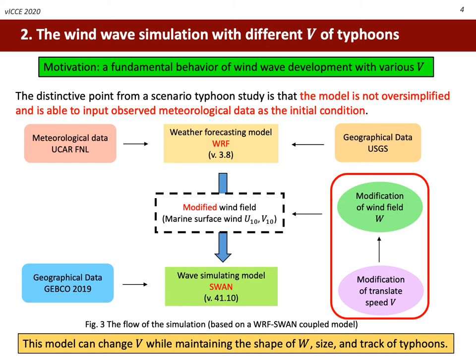This research was aimed at proposing a different method from a scenario typhoon study that could simulate slow-moving typhoons. Furthermore, a fundamental behavior of wave development with various translate speeds was investigated. This study utilized a WRF-SWAN coupled model. WRF is a weather forecasting model and SWAN is a third-generation wave development model. In these models, the typhoon field was not oversimplified and observed meteorological data was available.